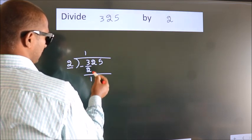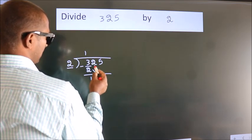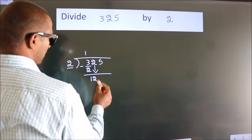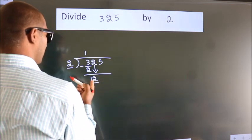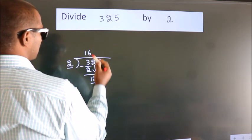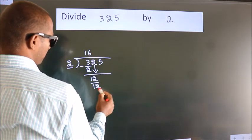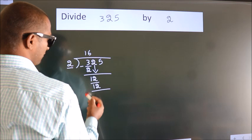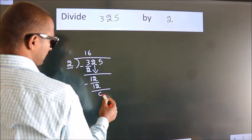After this, bring down the beside number. So 2 down, so 12. When do we get 12? In the 2 table, 2 times 6 is 12. Now we subtract. We get 0.